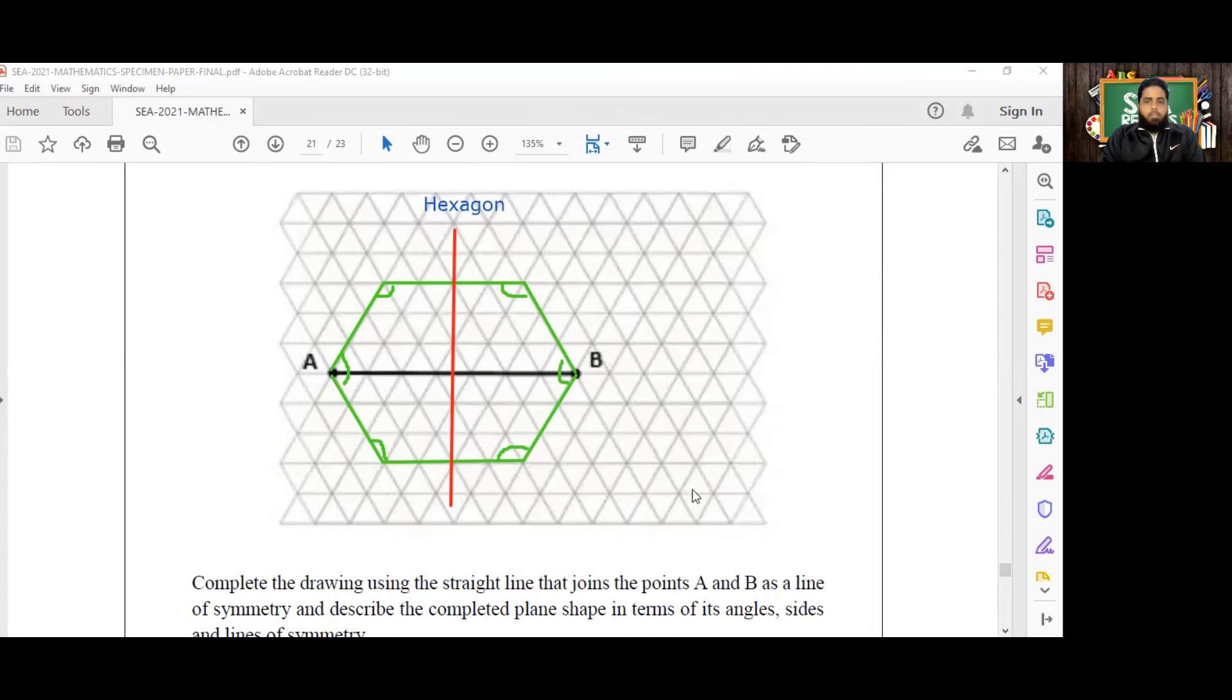Again, in terms of its angles and sides, there are six angles and six sides and two lines of symmetry. So you just write those points down in your explanation of this figure that we've created here: six-sided, six angles, two lines of symmetry, it's called a hexagon. And you will have completed this question.